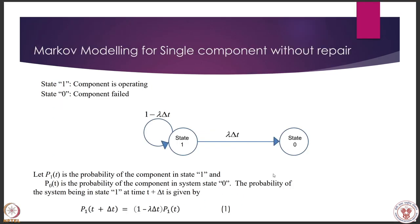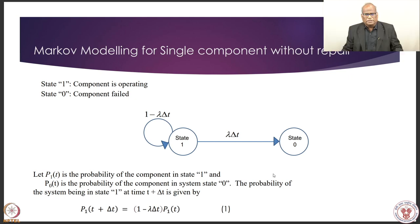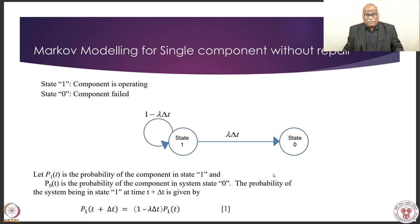We have seen the taxonomy of Markov modeling. Now let us consider a very simple Markov model. Markov models are used for more complex situations than simple 0 and 1. In a fault tree we can only input whether a component is operating or failed, but if we also need to account for repair and its effect on total unavailability, we need a more realistic scenario that includes repair.